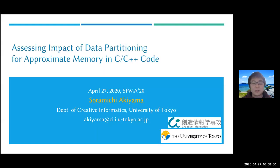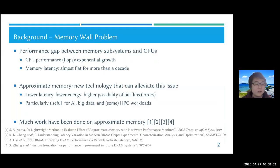Approximate memory in C/C++ code. So the background is the memory wall problem where the performance gap between memory subsystems and CPUs have been dramatically increasing because the performance of CPU, which means floating-point operations per second, has been exponentially growing.